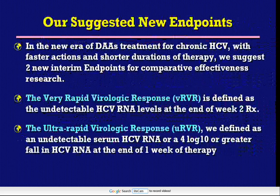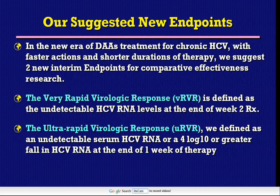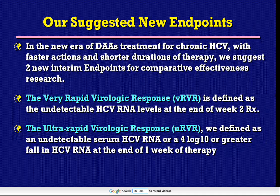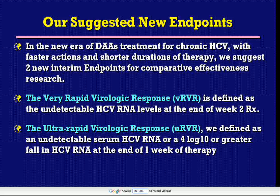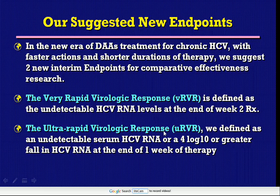Our suggested new endpoints are the very rapid virologic response and the ultra-rapid virologic response. In the new era of direct-acting antiviral therapy for chronic HCV, with faster actions and shorter duration of therapy, it is possible to use two new interim endpoints for comparative effectiveness research. The very rapid virologic response is defined as undetectable HCV RNA levels at the end of week 2 of therapy, and the ultra-rapid virologic response is defined as undetectable serum HCV RNA or a 4-log or greater fall in HCV RNA at the end of week 1 of therapy.